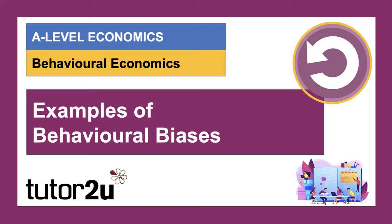Welcome to a revision video where we're going to take a few minutes to look at some of the cognitive or behavioural biases that can affect people's decisions and choices. The existence of such biases calls into question traditional orthodox models that assume people always act rationally, trying to maximise their individual self-interest and utility. In your exams, it's good to be aware of some of these biases, recognise them, provide examples, and link them into your economic analysis.